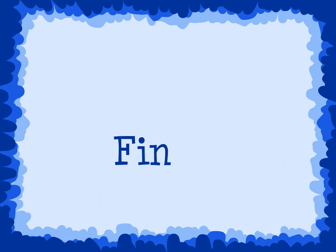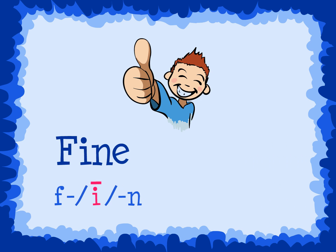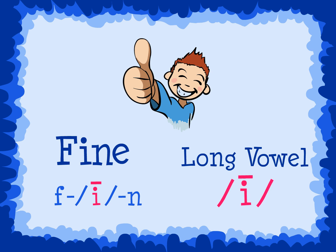Now let's try the same thing with the word 'fin.' If we add an E to the end of the word 'fin,' we get the word 'fine.' The way we pronounce each letter in the word is F, I, N. The E that we added to the end of the word changed the way we pronounce the I. I is the long vowel sound of the letter I.